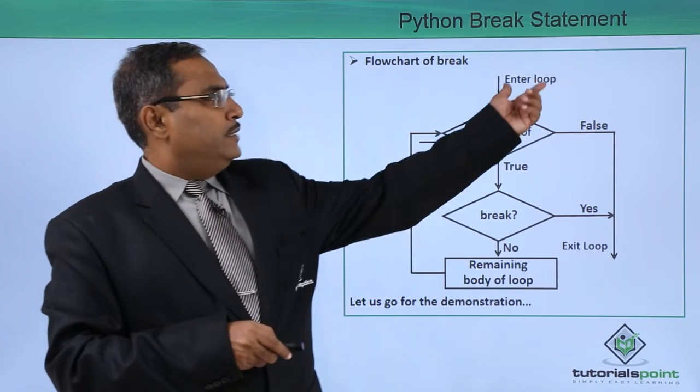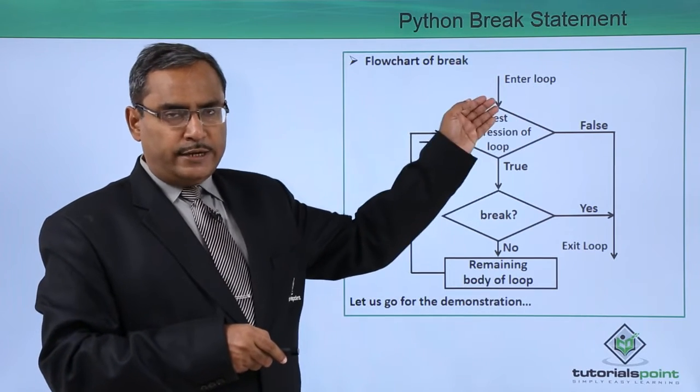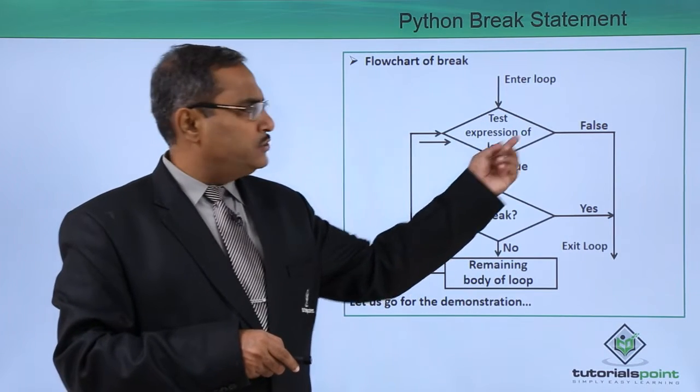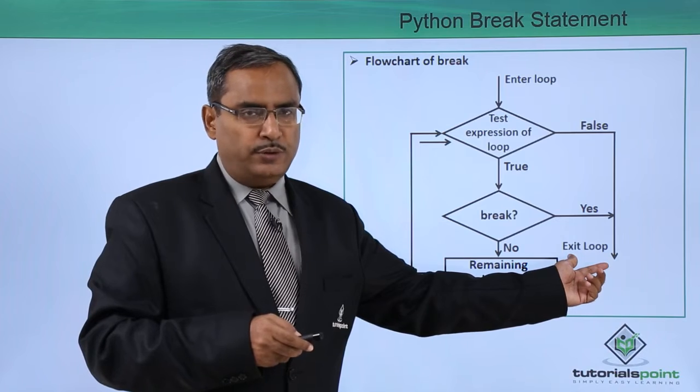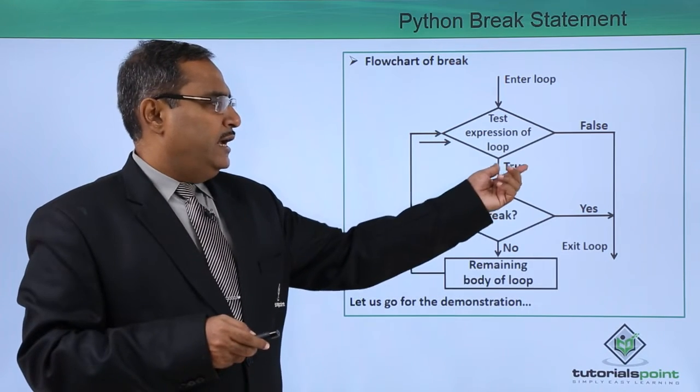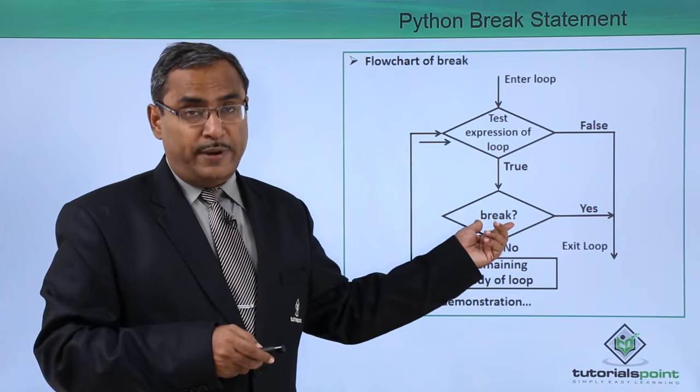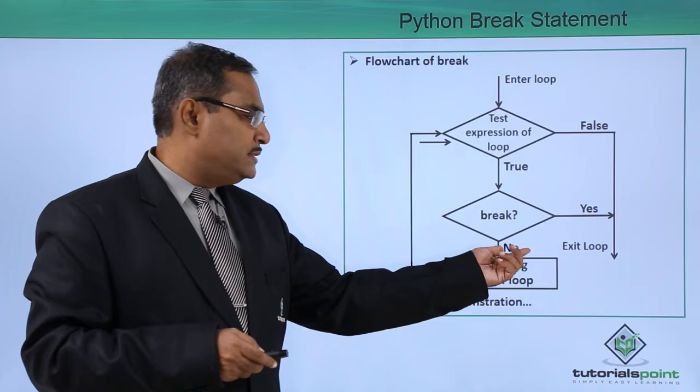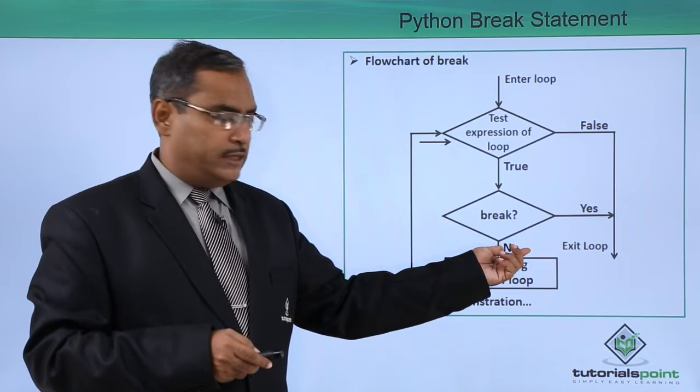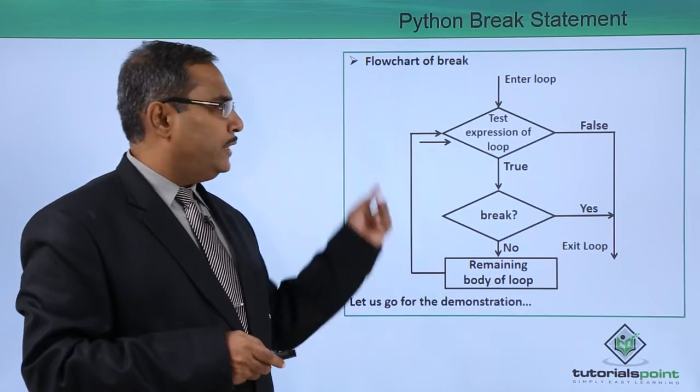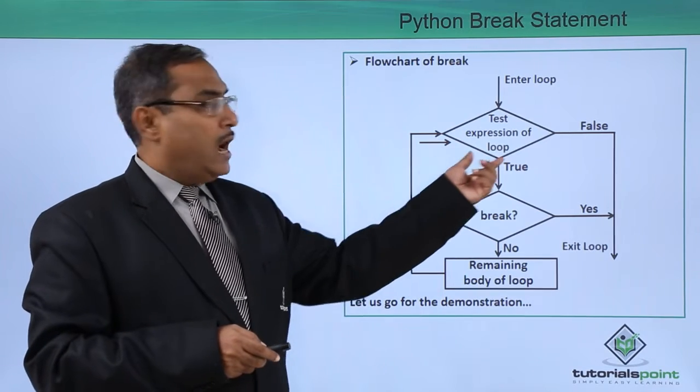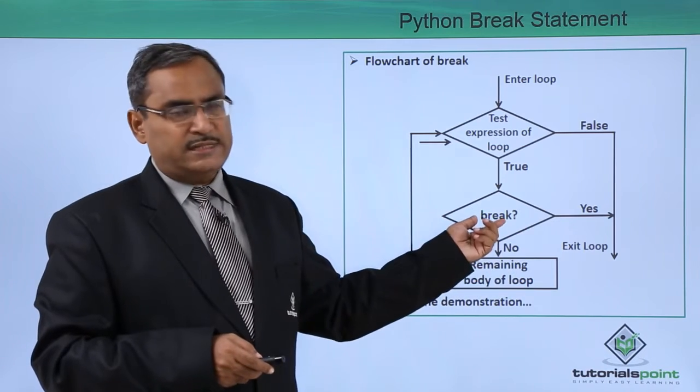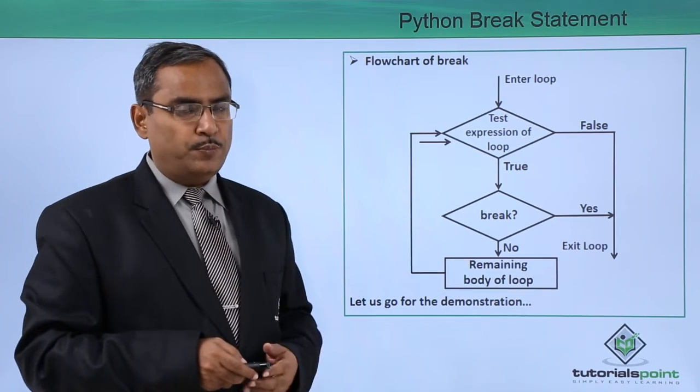Flowchart of break. Here the control will come entering into the loop. Now the test expression of the loop, if the condition is false, then obviously there is no need to execute the loop, so exit loop. Otherwise, if it is true, then it will be checked with the break statement is there or not. If the break statement is there, then it will exit the loop. Otherwise, when the break statement is not there, then remaining body of the loop will get executed and this process will be repeated until this test expression is producing false or if there is some break statement, it will come out from this loop.